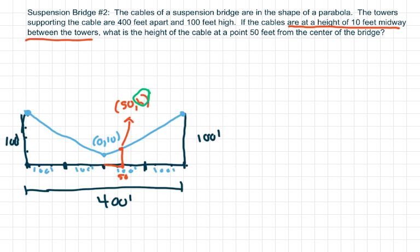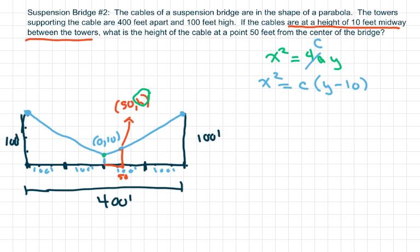It has the shape opening up, so it's x² = 4ay. We really don't need to call it 'a' — I'm just going to call this C to avoid confusion. So basically I'm going to set this up and we have x² = C, and my Y is shifted up, so it's going to be C times (Y minus 10). Remember, the vertex here would be at zero comma 10.